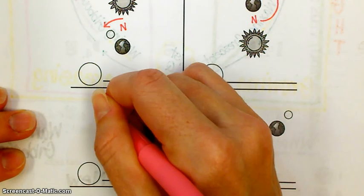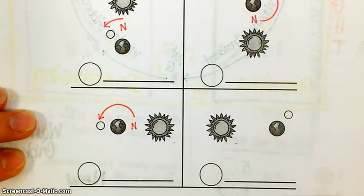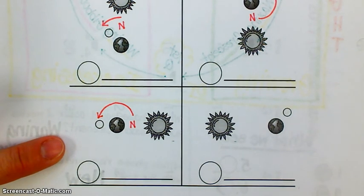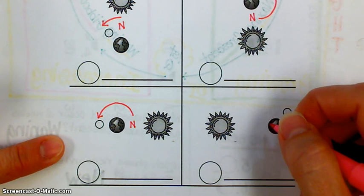And then you go counterclockwise. So what is this phase down here? The bottom left. Full. Very good.